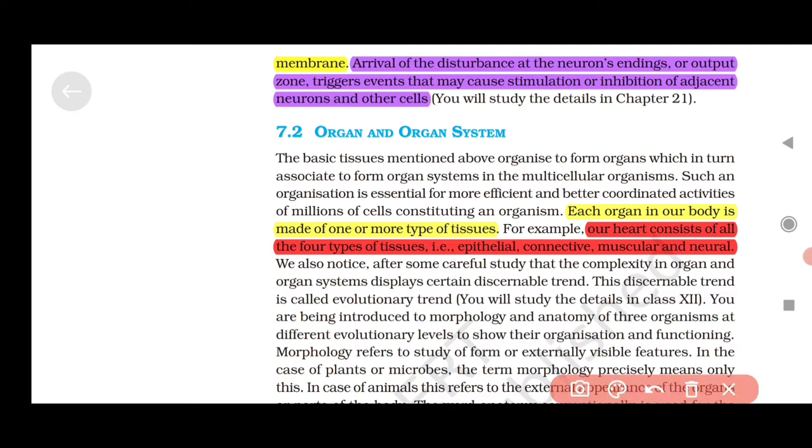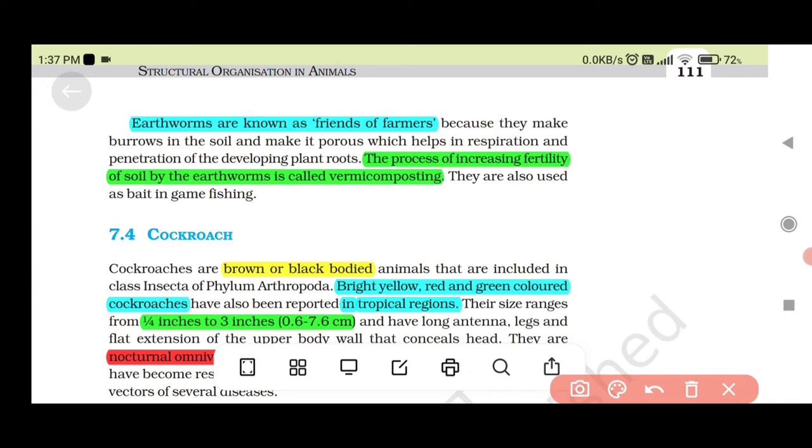Organ and organ system: Each organ in our body is made of one or more types of tissues. For example, our heart consists of all four types of tissues: epithelial, connective, muscular, and neural. Earthworms are known as friends of farmers. The process of increasing fertility of soil by earthworms is called vermicomposting.